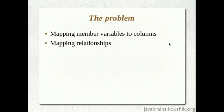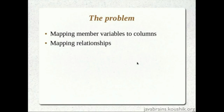The second pain point: mapping relationships. Say a user object has a reference to an address object. We would have an address table, and I'd have to map the user object to the user table and the address object to the address table. If there is a dependency between these two objects, I have to create a foreign key — mapping the address table's primary key as a foreign key in the user table. This relationship also has to be handled manually.